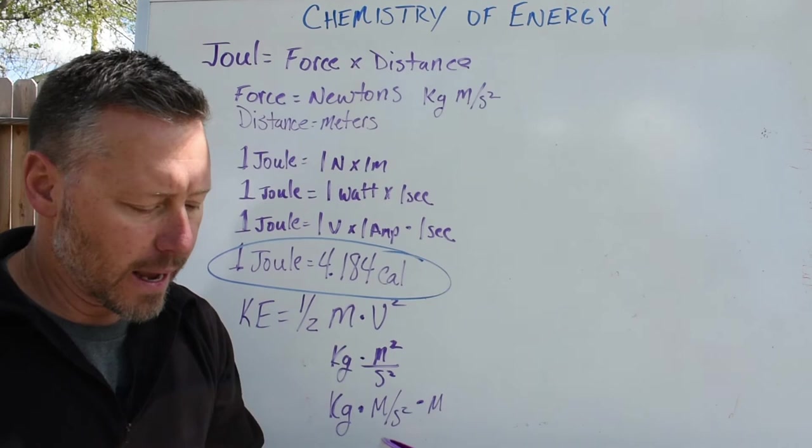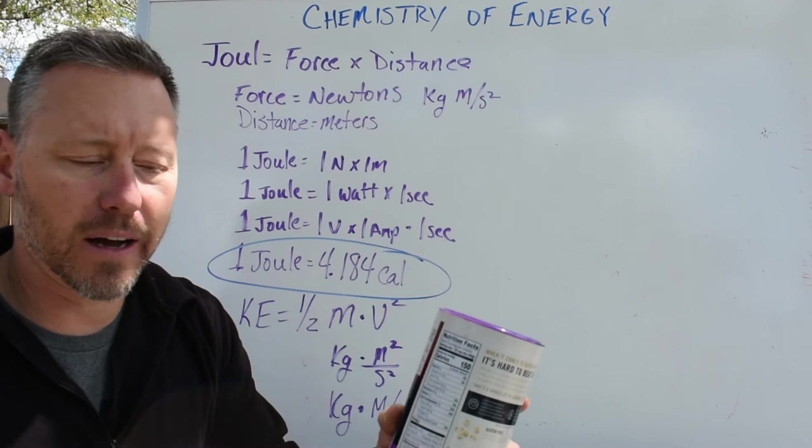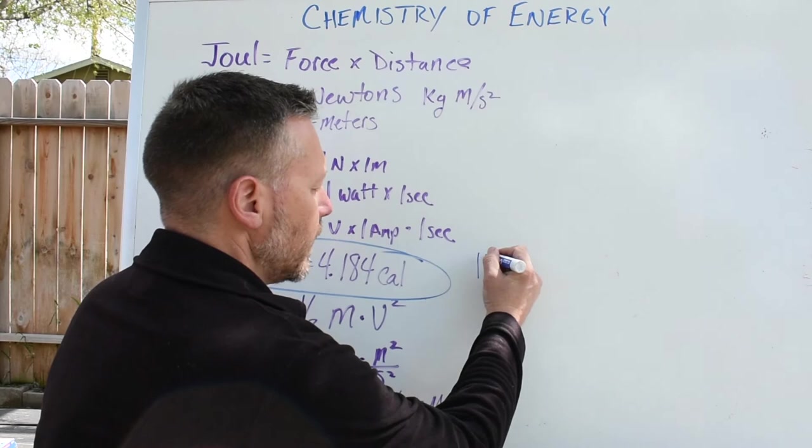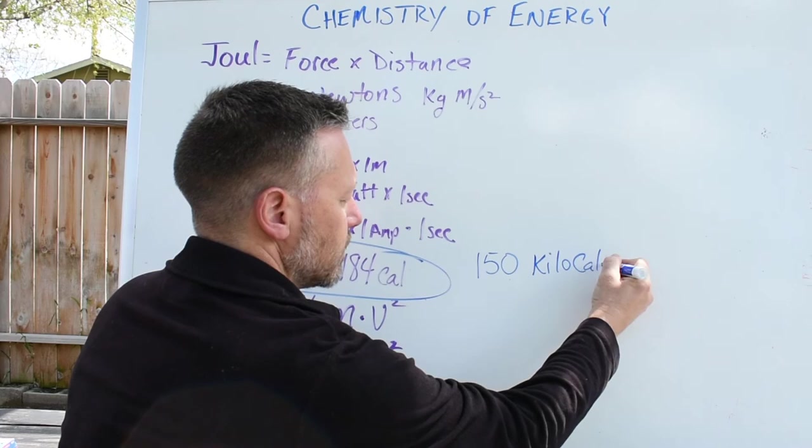I have an oatmeal container here. I guess I'm lucky to still have oatmeal. That seems to be kind of hard to find. But if you take a look here, hopefully it focuses well, but the oatmeal has 150 calories. Well that's actually 150 kilocalories.